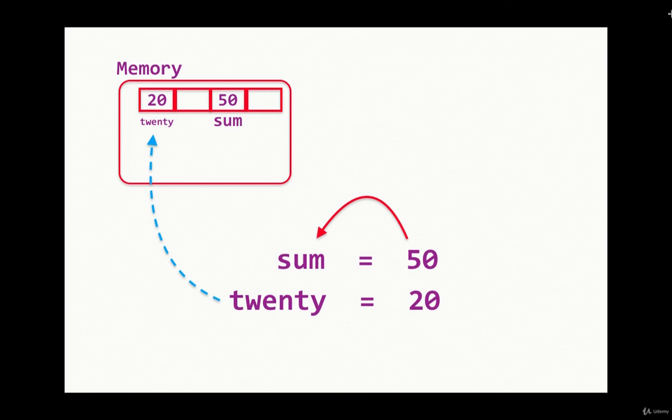We need not explicitly define the data type of variables as we have to in many other languages like C and C++. Python automatically sets the data type of a variable by looking at the value of the variable.